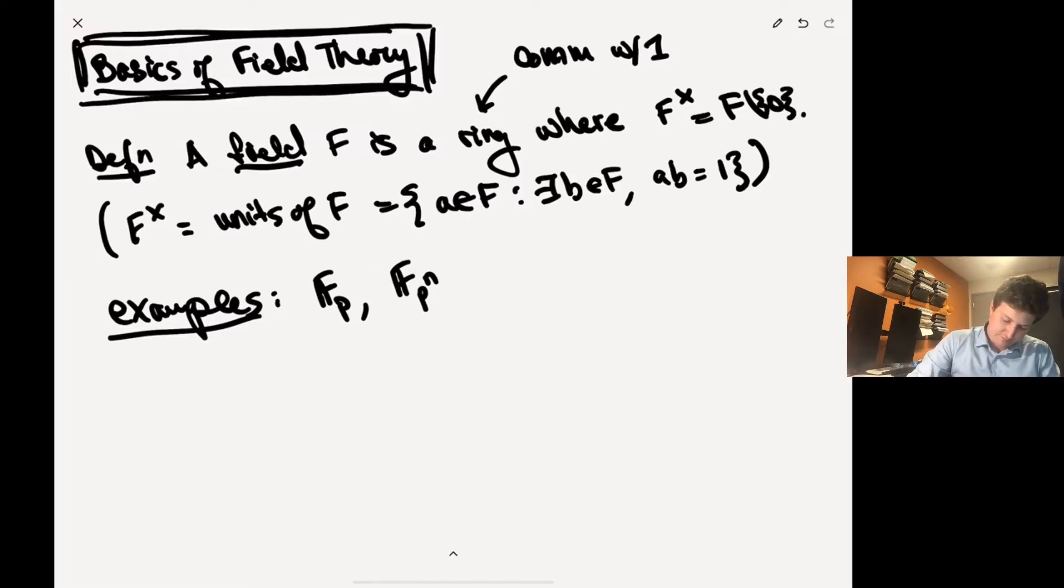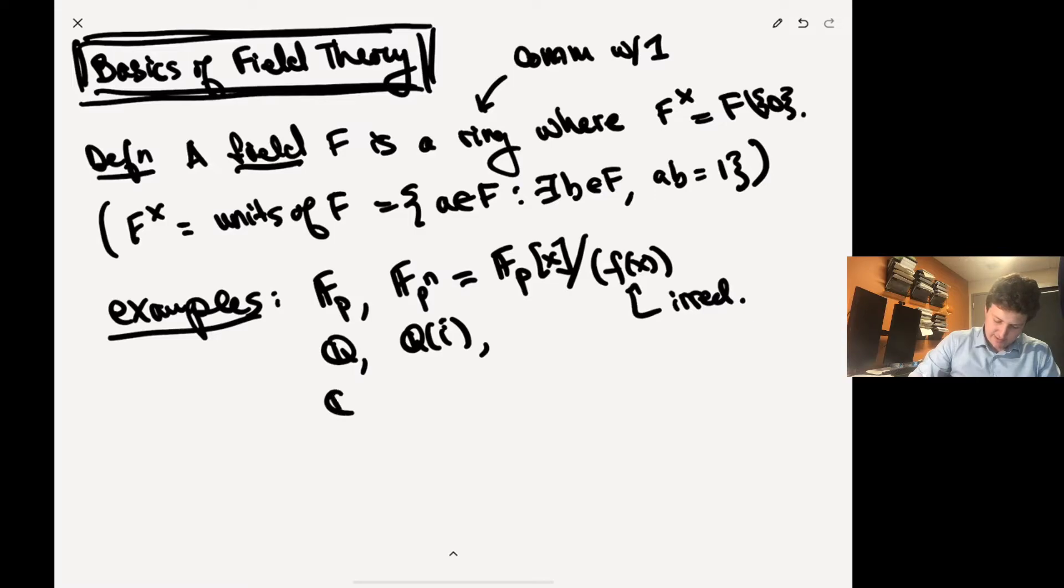So these are finite fields and their cardinality is prime, these are prime power fields. So we talked that these were given by these things look like F_p[x] modulo an irreducible polynomial, so this is irreducible. So Q adjoin i, etc., right, so these are fields that we've talked about. C(t), so these are all examples of fields.